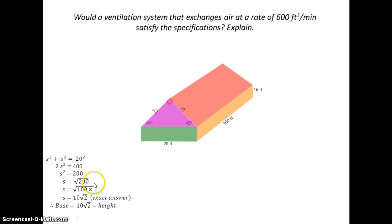s equals the square root of 200. I can reduce that radical to 10 root 2. This is my exact answer, and that's the way I want to leave it to find my exact volume.